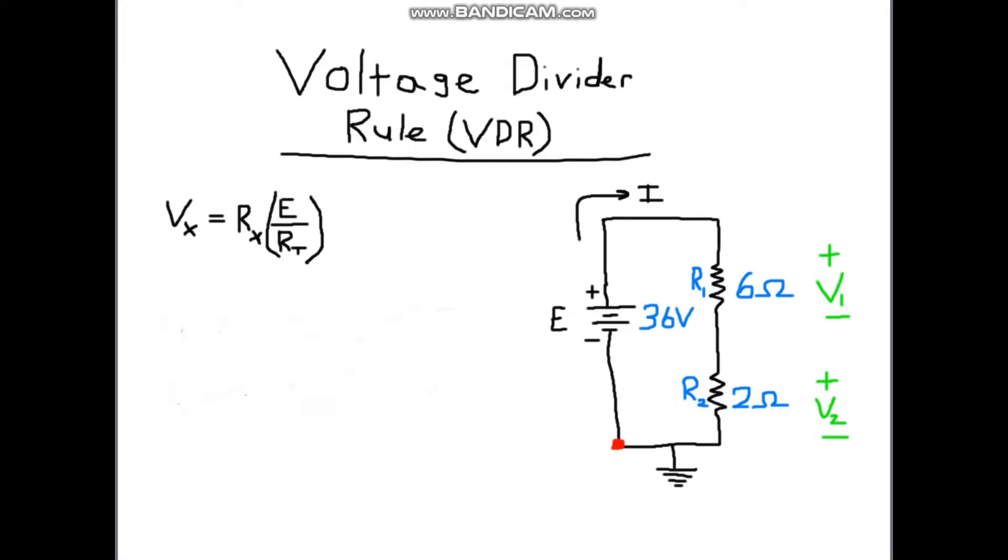So we can see based on this formula that first of all, we're going to need the total resistance, we don't have that yet. We've got a 6 ohm resistor here, we've got a 2 ohm resistor here, and we've got some voltage drop that's unknown that we're solving for. We've got a voltage drop V1 over R1, and we've got a voltage drop V2 over R2.